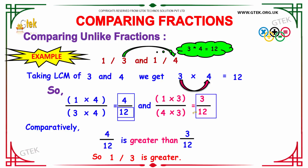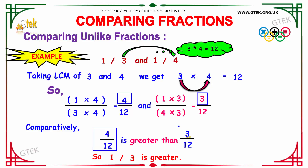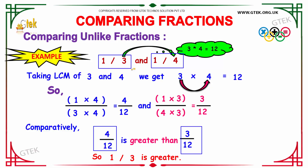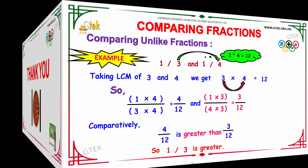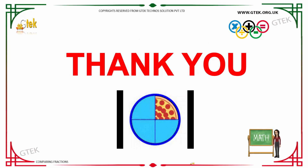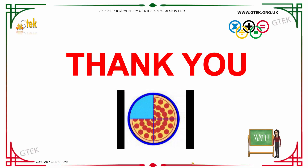Now we have 12 on both sides as the denominator. Comparing the numerators 4 and 3, we see that 4 is greater than 3, so 4/12 is greater than 3/12. Since 4/12 represents 1/3 and 3/12 represents 1/4, it is understood that 1/3 is greater than 1/4. Hope you got an idea of how the comparison of fractions works. Thank you for watching from GTECH.